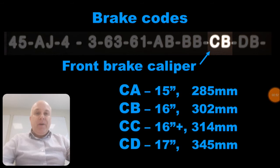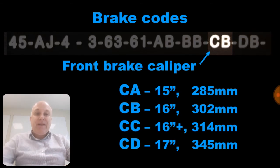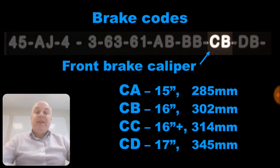The third brake code is for the front brake caliper and starts with a C. Codes are CA, CB, CC, and CD. Like the front disc codes, these represent 15-inch 285 mm, 16-inch 302 mm, 16-inch plus 314 mm, and 17-inch 345 mm.